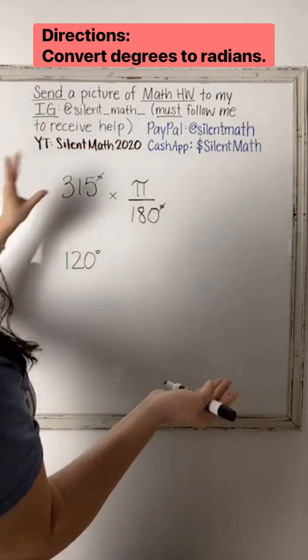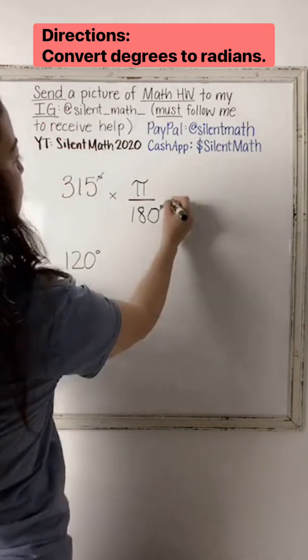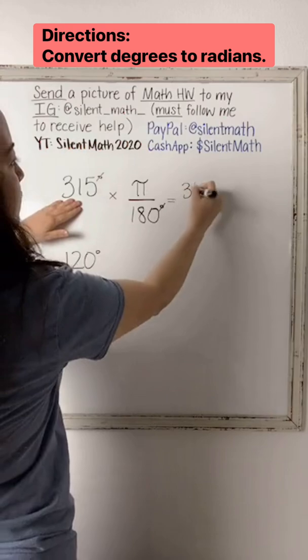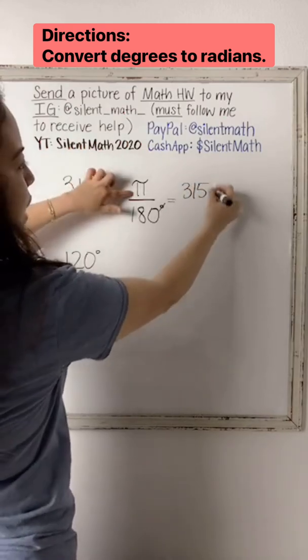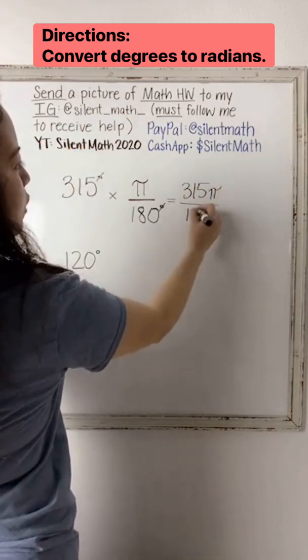So now we would just have to simplify. We'd have to multiply across, we get 315 times pi, it's just pi, all over 180.